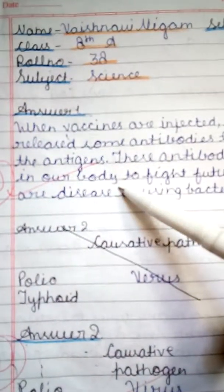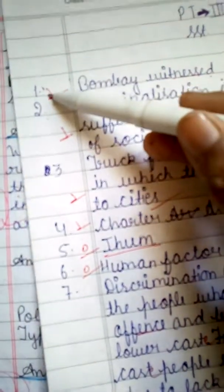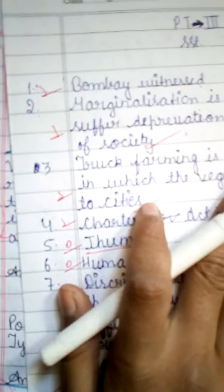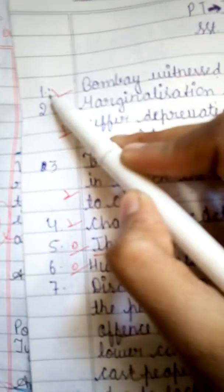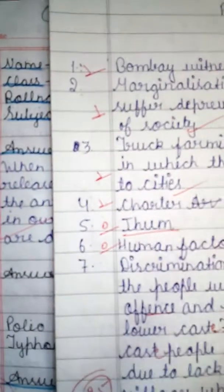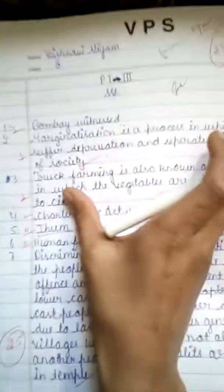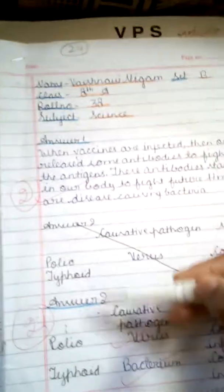For the answer, basically what we do is start from the middle of the page. We will see the middle of the matter. Here we will write answer 1, answer 2, answer 3, answer 4, and so on. Let's start with answer 1, then answer 2.